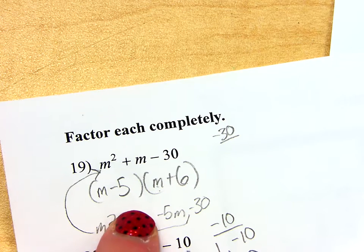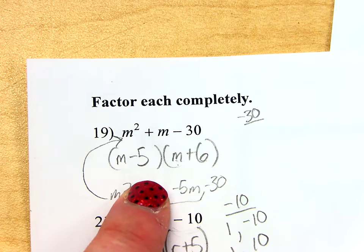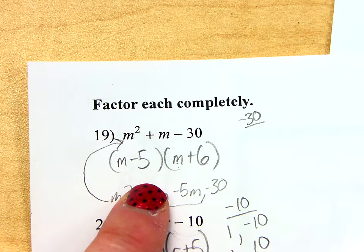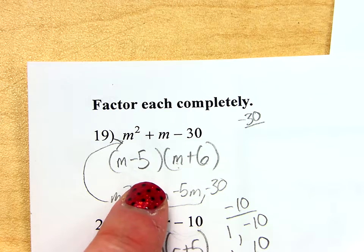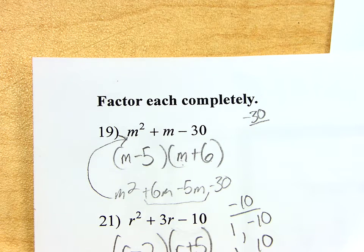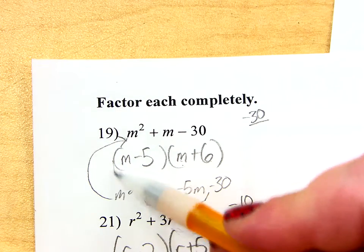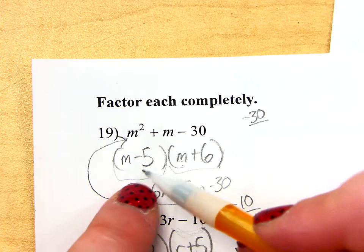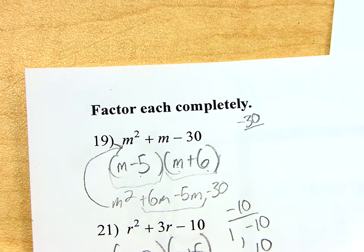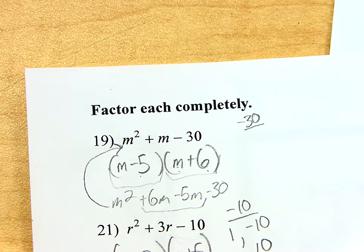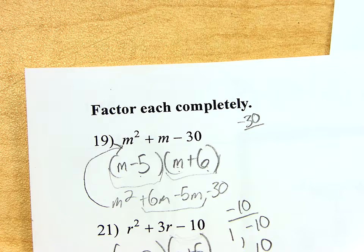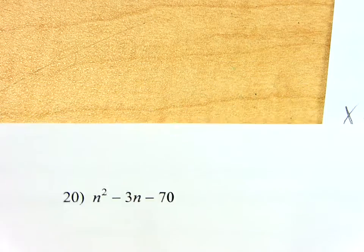So, again, ladies and gentlemen, the order doesn't matter, but you have to have the negative with the 5. Have to. So, you can't have negative 6 and a positive 5. That won't work. But your first factor could be M plus 6, and then the second one's M minus 5. The order of these two does not matter. But you could take the two binomials and swap them. It doesn't matter. Does that make sense? All right.